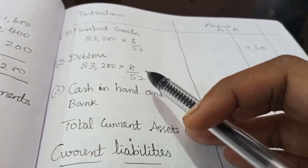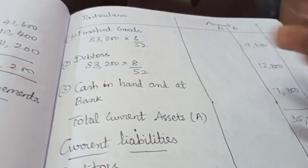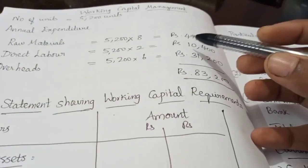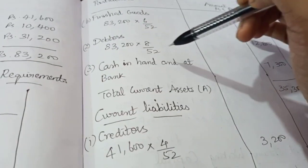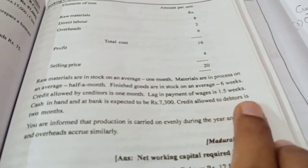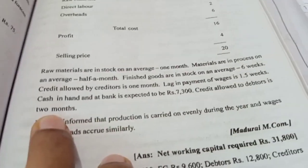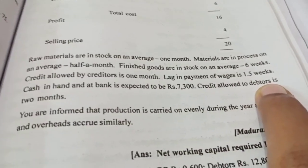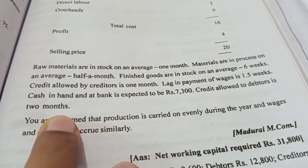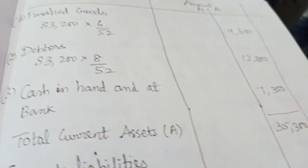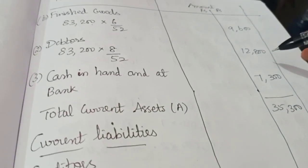Next is debtors. The total cost amount of 83,200 is used. Credit allowed to debtors is 2 months. Converting: 2 months equals 8 weeks. So: 83,200 multiplied by 8 divided by 52 equals 12,800.